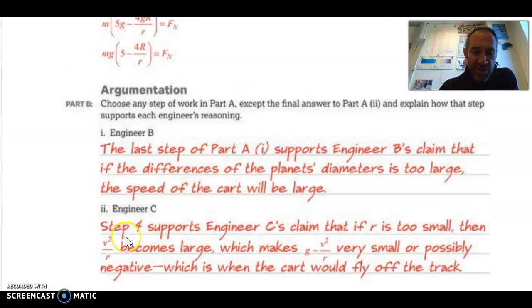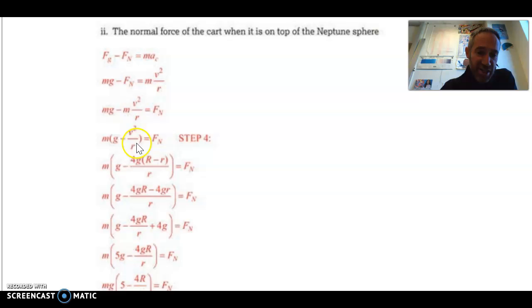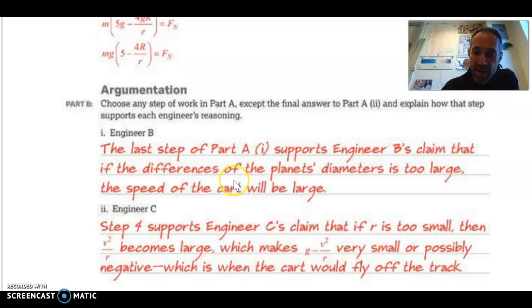And then Engineer C said, step four supports Engineer C's claim that if R is too small, then V squared over R becomes large, and that makes G minus V squared over R very small or possibly negative, which is when that would fall off of the track. And so you can see Engineer C's claim right here. She is right that little R could become a big problem. I hope that that all made sense, and it may be a good idea to try those over fresh if you didn't get there, and maybe just use this video for some hints. Thank you.